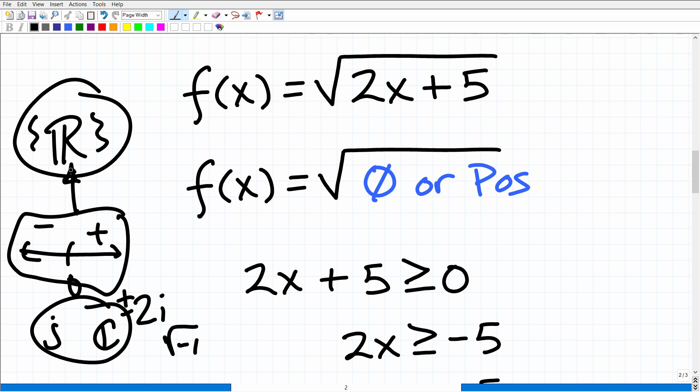So in terms of the real number system, we have certain restrictions, one of which is we cannot take the square root of a negative number. Now, if you have a basic calculator, you just want to do an experiment real quick. Go ahead and try to take the square root of negative 7. Your calculator might just give you a bunch of question marks or come up with error.